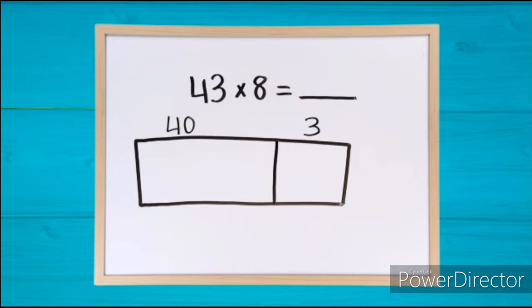We are multiplying by the number 8, so write the 8 on this side of the rectangle. Now, let's multiply 8 by 40 and by 3.